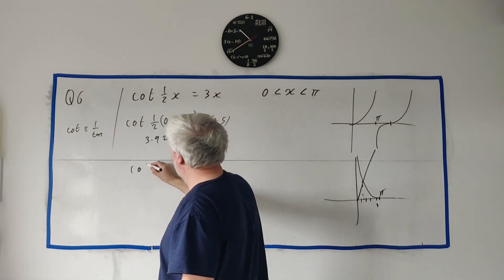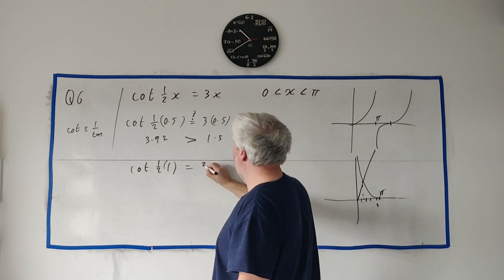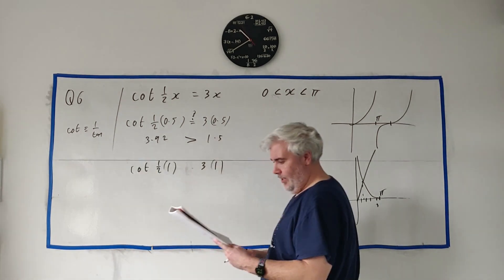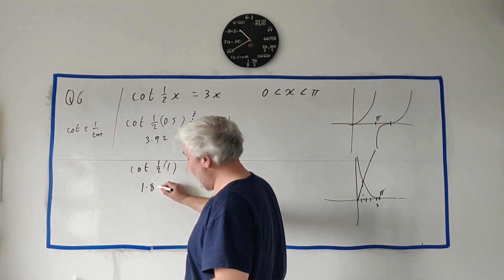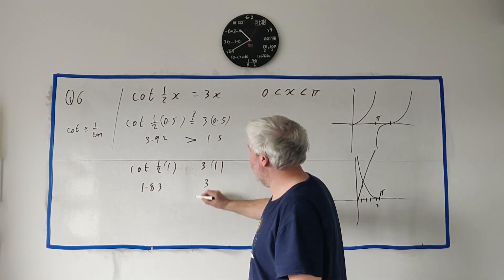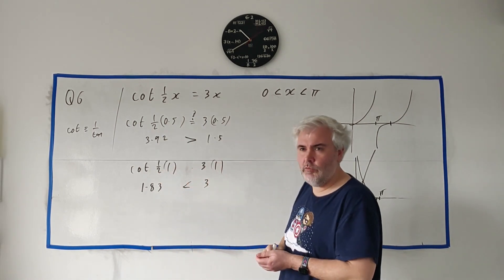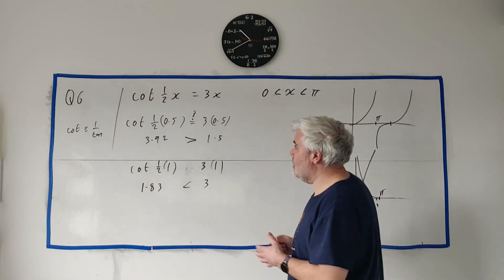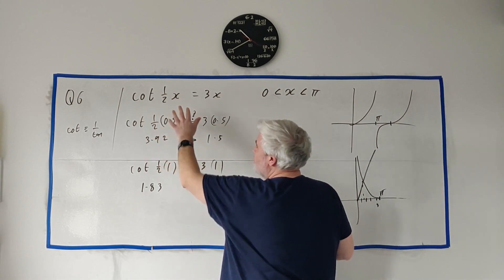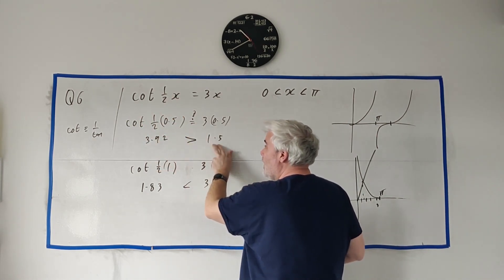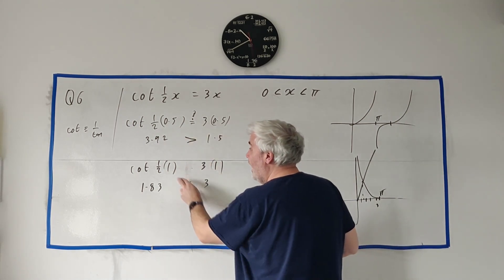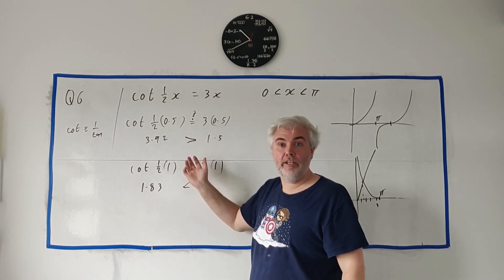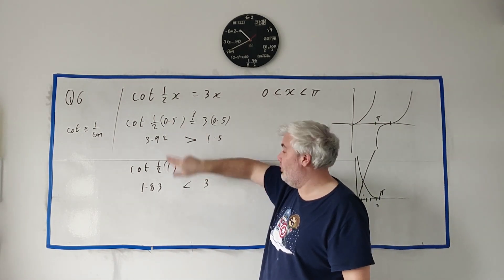Then I'd do this again for x = 1: cotan of 1 equals 3 times 1. Put these into a calculator and you'd get 1.83 on the left-hand side and 3 on the right-hand side. And 3 is bigger than 1.83. So this is what they wanted you to get. Because the left-hand side is bigger than the right at 0.5, and at 1 the left-hand side is smaller than the right, they must cross somewhere between there — the answer for x must be somewhere between 0.5 and 1.